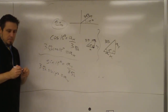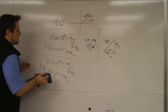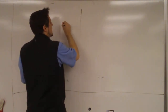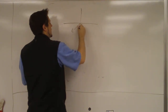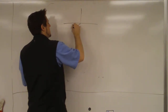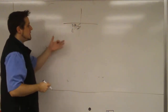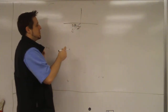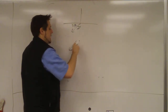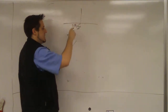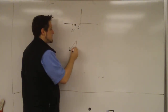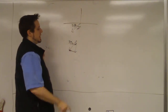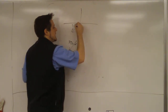One more brief example — make sure your calculator is in degree mode. Say you have a vector pointing down and to the left at 10 degrees. You draw in the y-component and the x-component to form a right triangle with the hypotenuse of 3 and the 10-degree angle. You can also use the 80-degree angle on the other side — both are correct and give the same result.